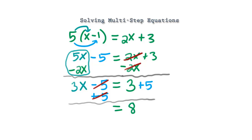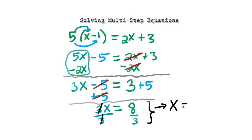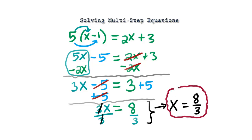We bring down the 3x. There's only one step left — divide both sides by 3. This 3 and this 3 cancel, leaving just x. So x equals 8 over 3, or if you want, you can make it a mixed number: 2 and 2 thirds. We can leave it as x equals 8 over 3, and we're done with this one.